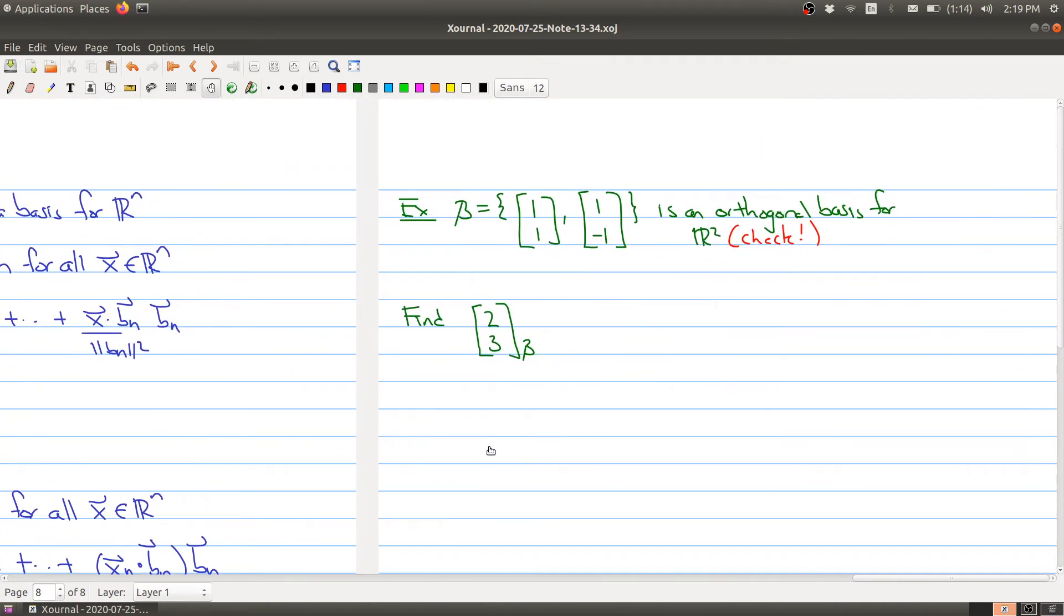So I thought I would just do one example of this process. I have two vectors here and I claim that this is an orthogonal basis for R². You should check—there's two things to check. First, you have to check that it's orthogonal and then you also have to check that it's a basis. But let's say I wanted to find the b-coordinate of (2,3) with respect to this basis. Well, I just use the formula, right?